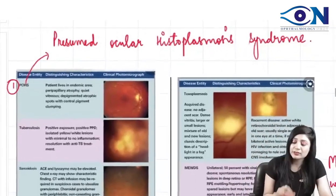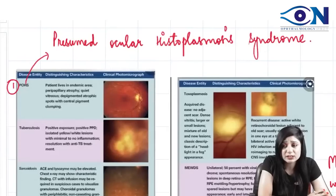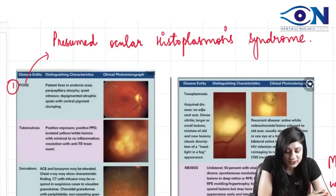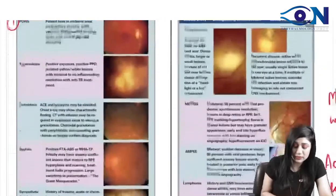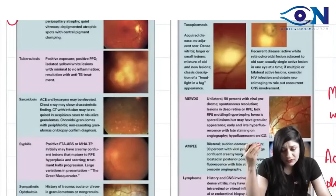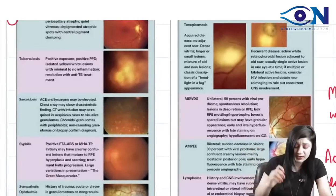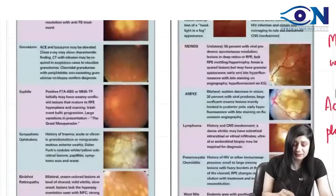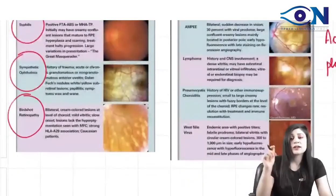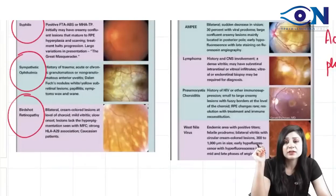The first is POHS — presumed ocular histoplasmosis syndrome. Second is tuberculosis. We also have sarcoidosis — all the granulomatous diseases come with pan-uveitis. Then there is sympathetic ophthalmia, syphilis, sarcoidosis, and a condition called birdshot retinopathy.